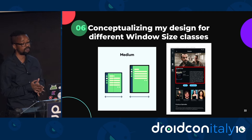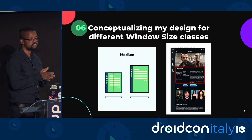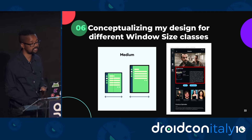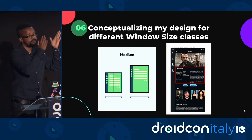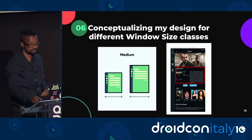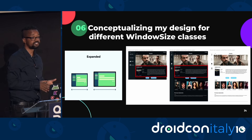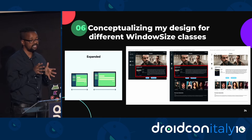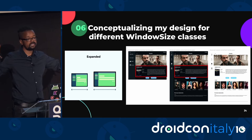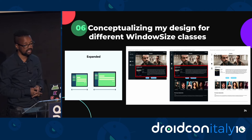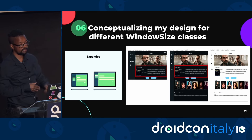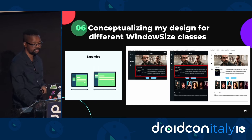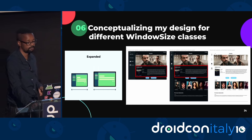Continuing with the show detail screen on the medium window size class: move the show synopsis and put it next to the poster and airing information instead of below it, making that section have three columns. The expanded window size class design is similar to medium, only the synopsis gets to occupy a bigger space, and you can see more cast images because the screen space has increased more than on compact and medium.